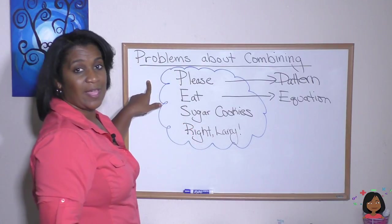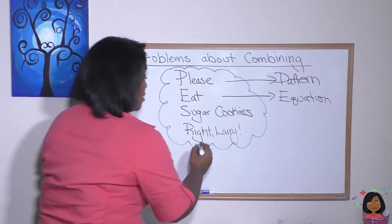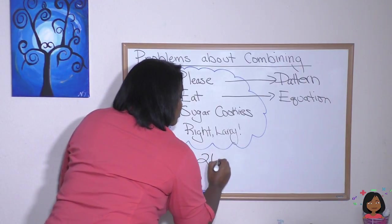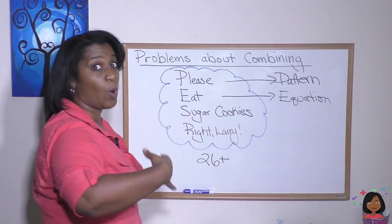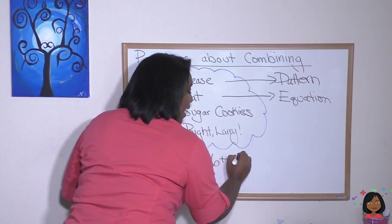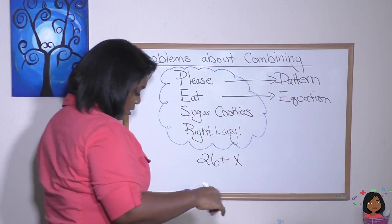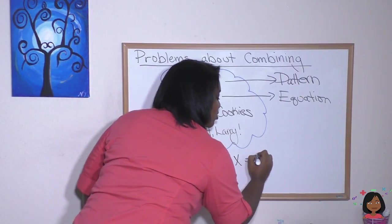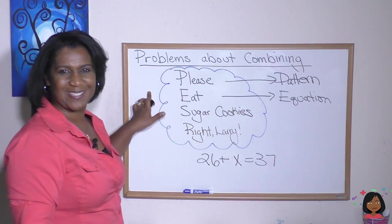So when we say there was some, that means we had 26 shows to start. 26 shows plus we don't know how many shows got taped during the day. We don't know what the some more is. So we're going to use a variable for that. Let's call that X. And then at the end, there were 37 shows. So the total was 37. So there's our equation. The E is for equation.